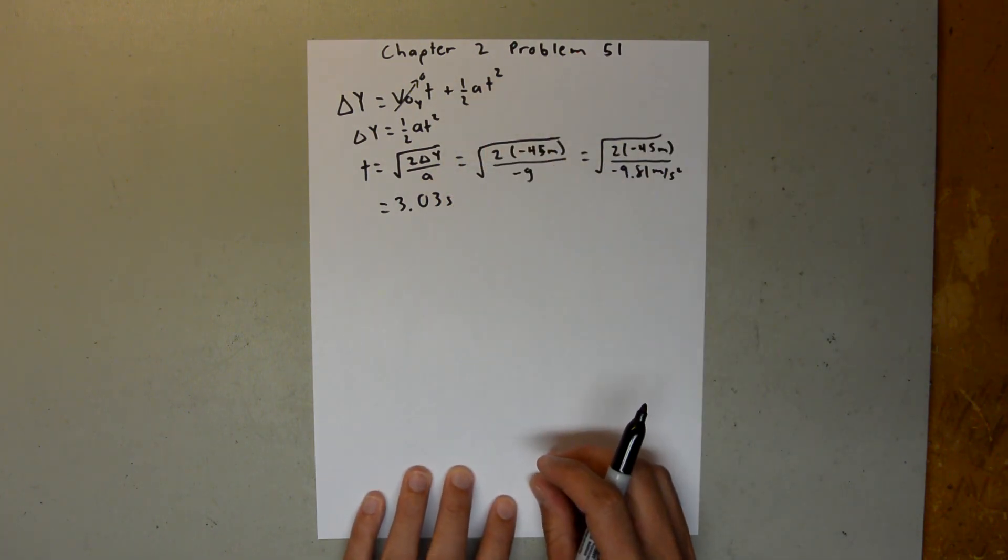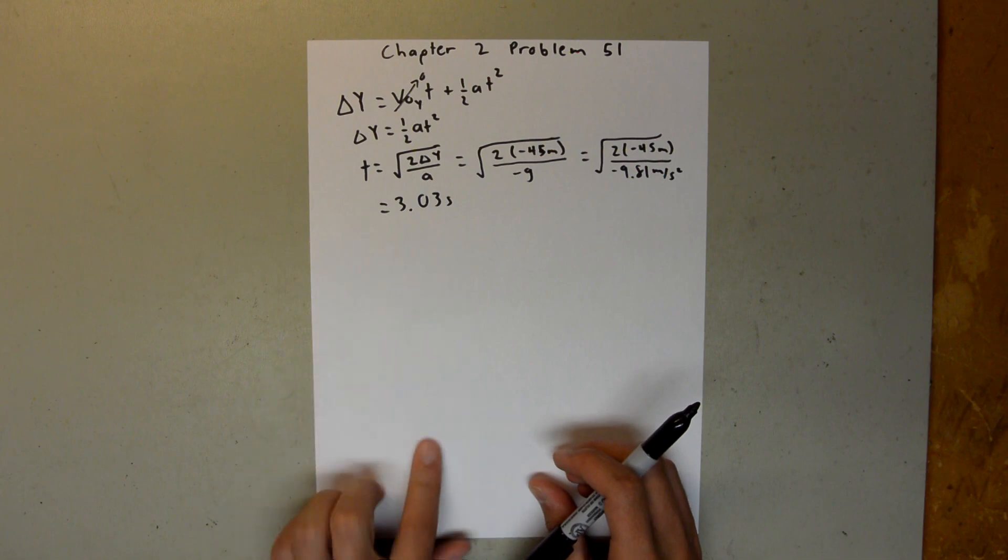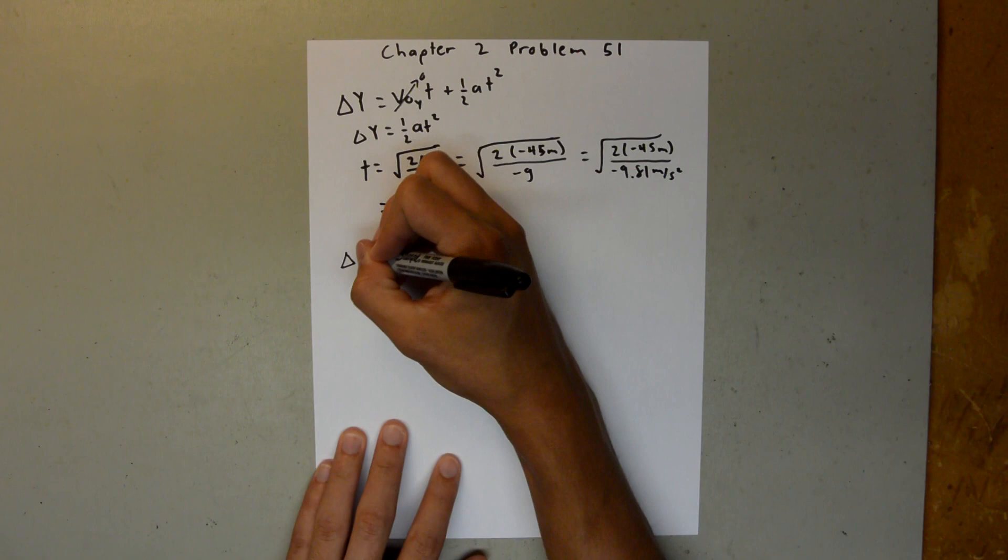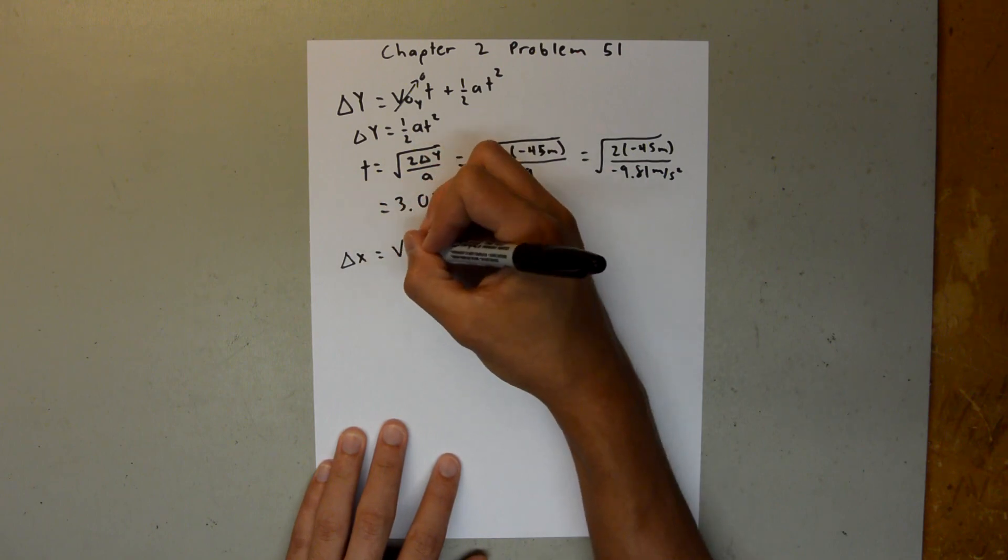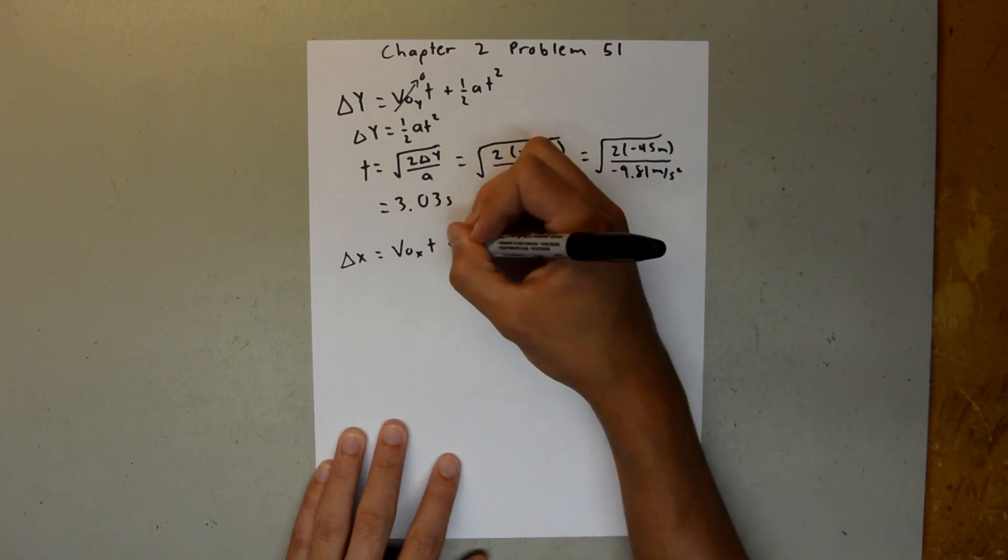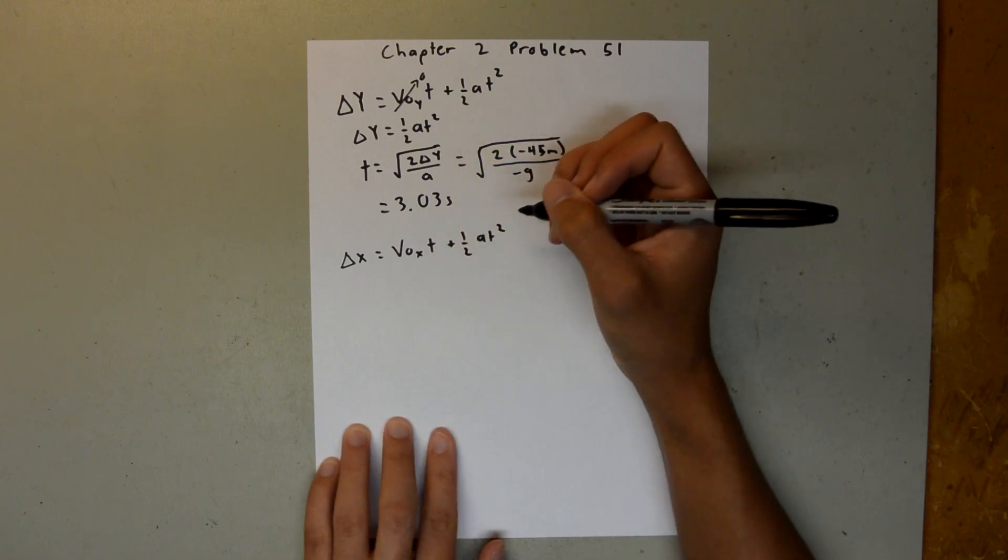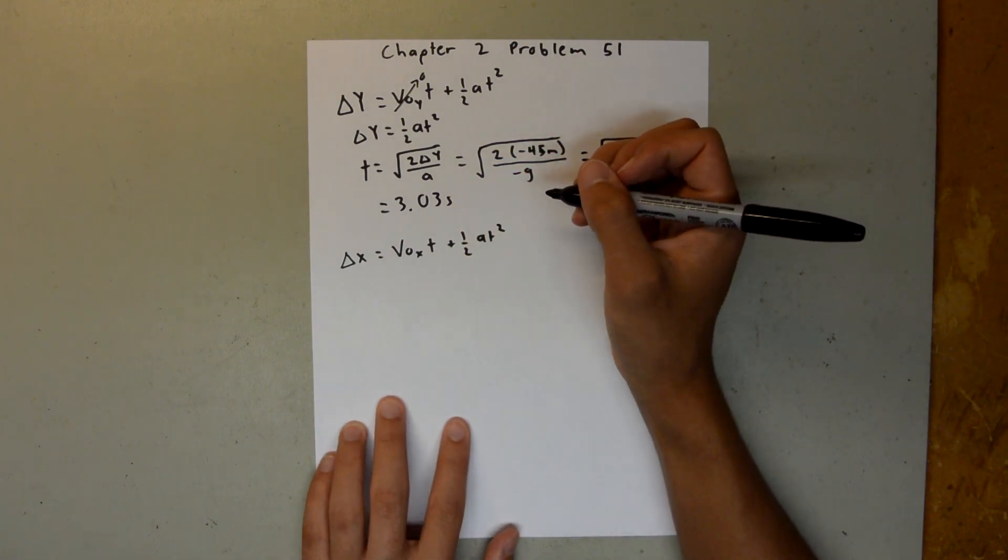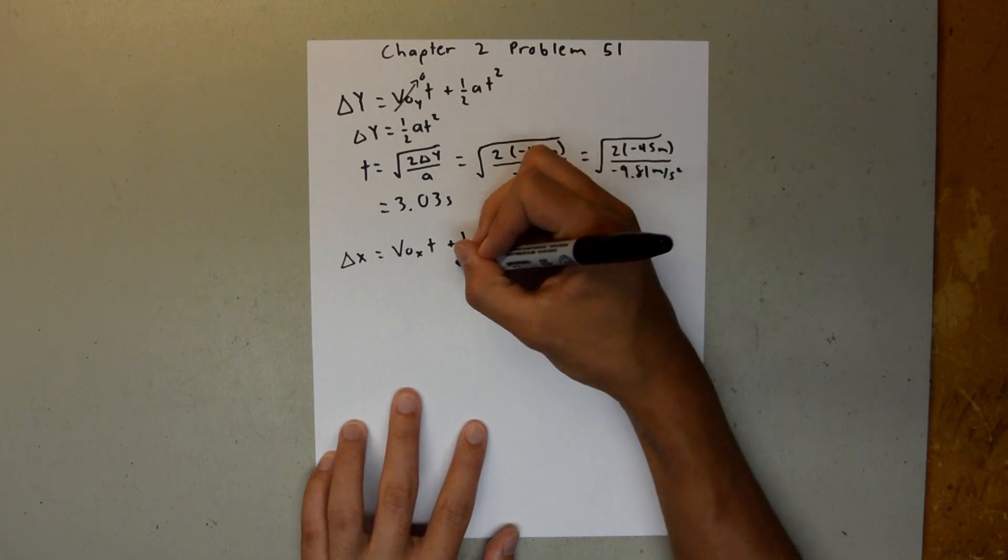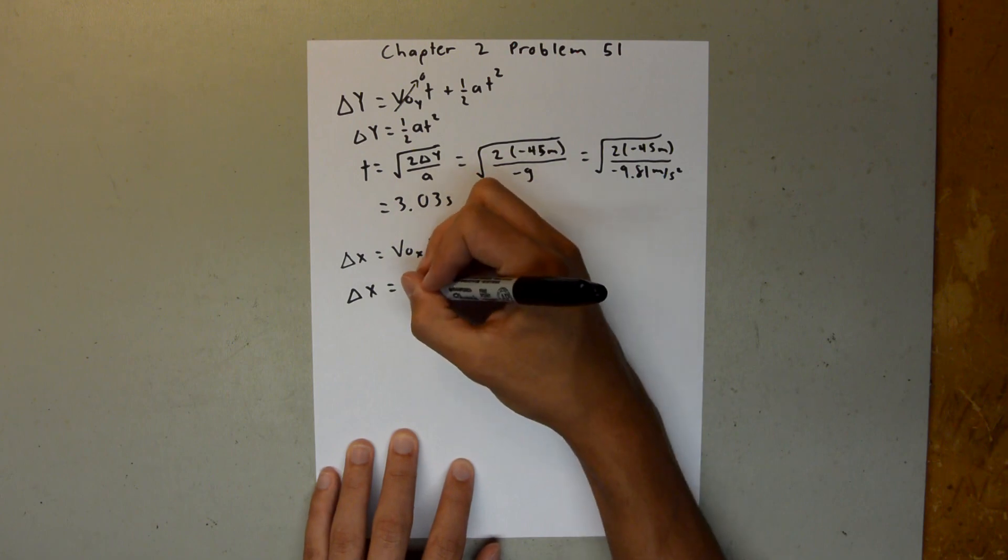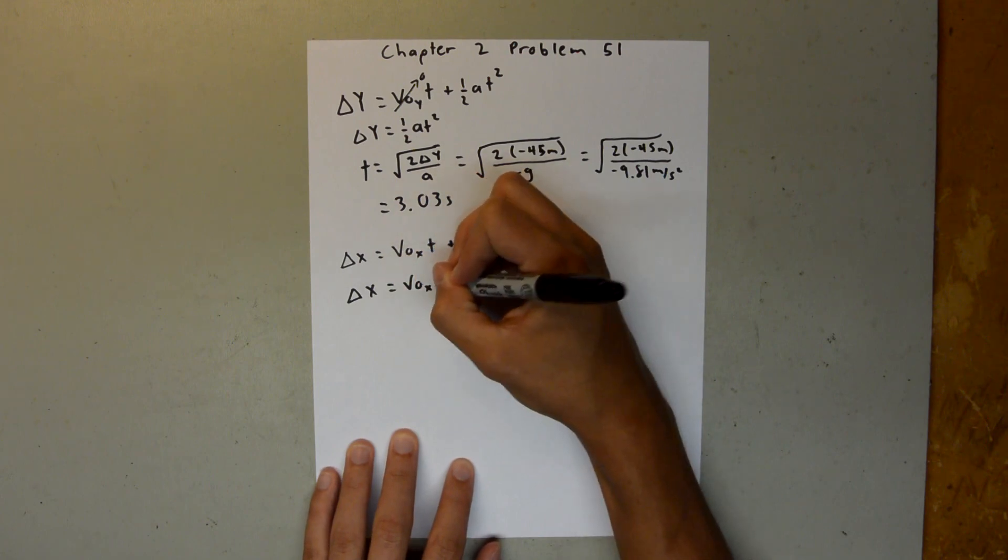And now we can use this time for the boat, and we can use the same kinematic equation just in the x direction, and say delta x is equal to the initial velocity in the x times t plus 1 half at squared. And in this case, since the boat is moving with constant velocity, it is not accelerating, so we can set this equal to 0.